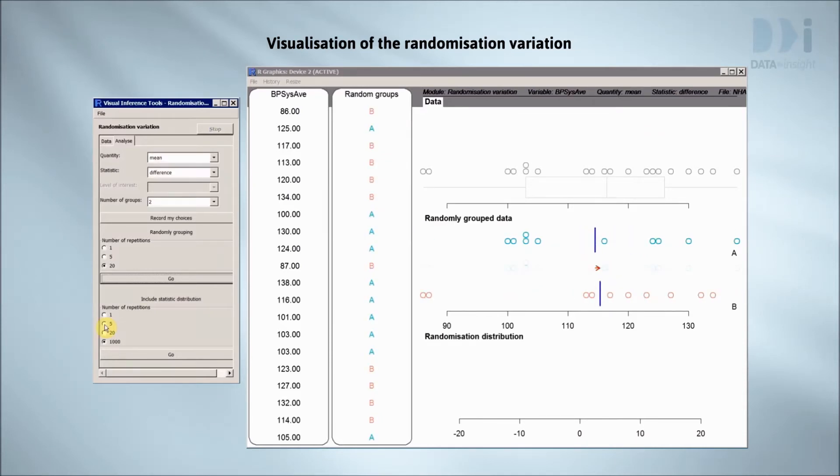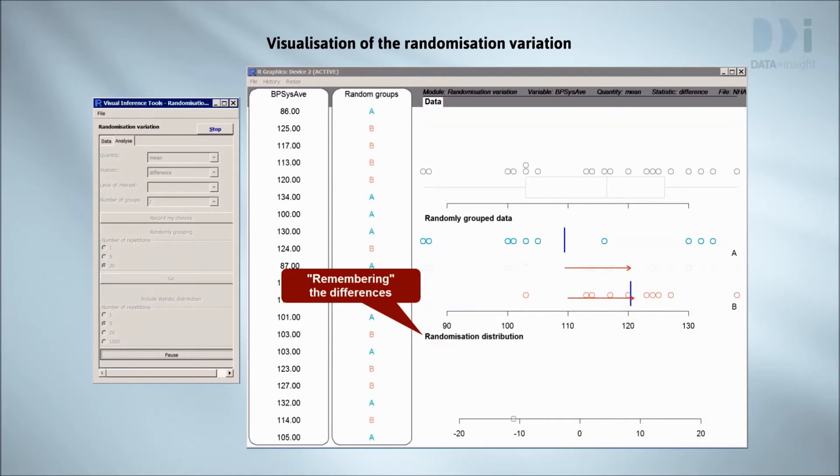We've been seeing random labeling with A's and B's producing small and large differences in mean blood pressure, but we need a way to record these differences as they go by. This is how we do it. The arrows drop down and we record their lengths in the bottom panel. Right pointing arrows, positive differences, go to the right of zero, while left pointing arrows, negative differences, go to the left of zero.